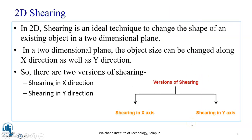In this video lecture, we will be discussing about 2D shearing. Shearing is an ideal technique to change the shape of an existing object in a two-dimensional plane. The object size can be changed along the x direction as well as the y direction. So there are two versions of shearing: shearing in the x direction and shearing in the y direction.